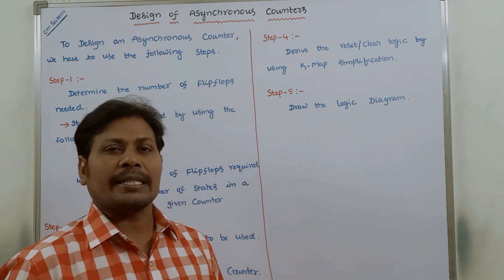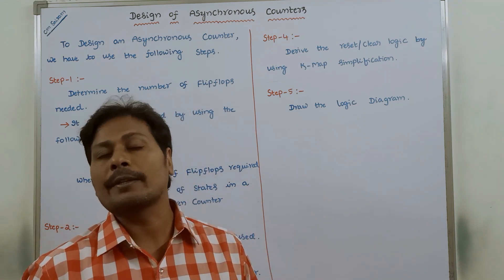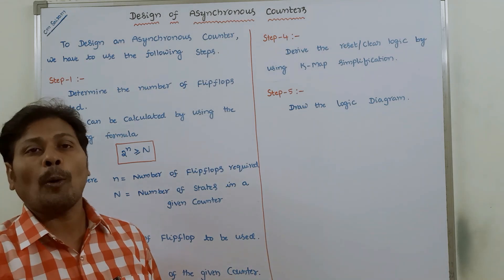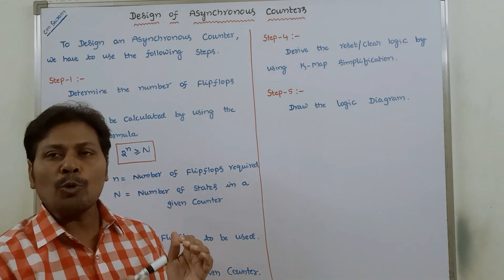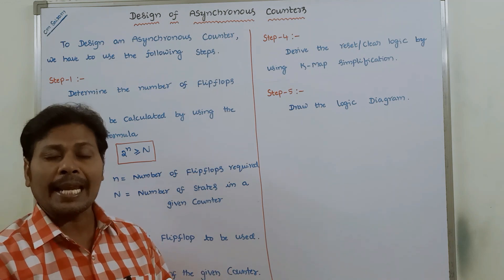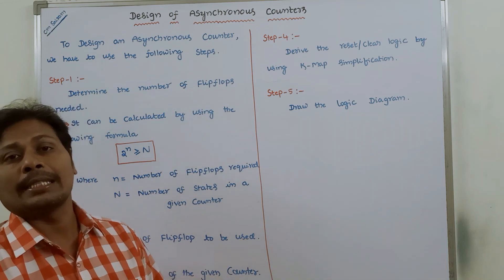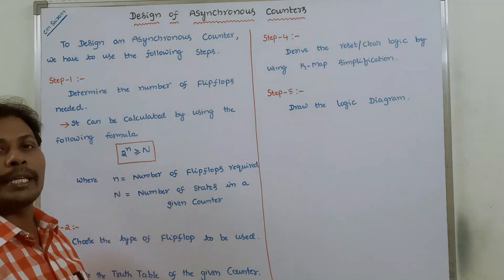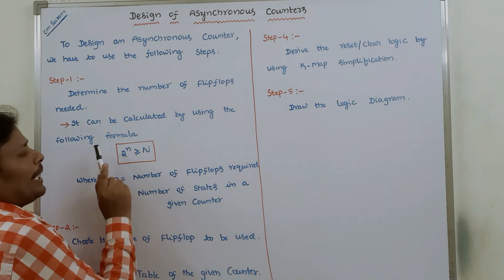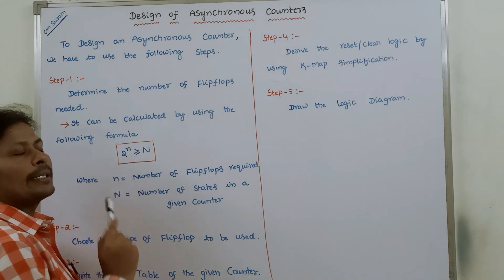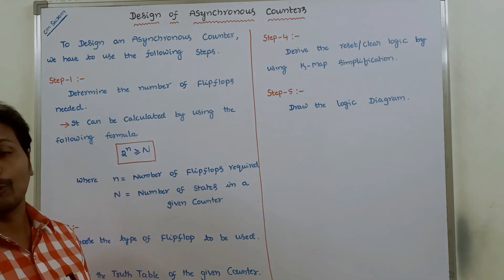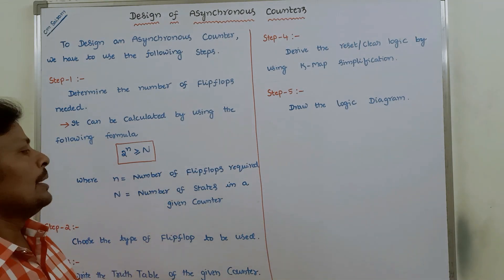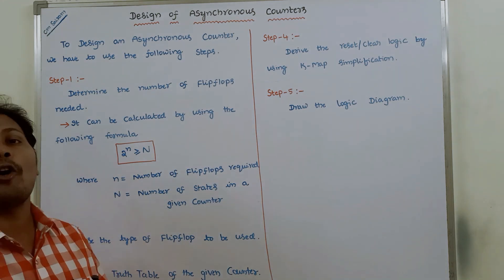To design any asynchronous counter, we have to follow the following steps. Step 1 is to determine the number of flip-flops needed — that means how many flip-flops are required to design an asynchronous counter. That can be calculated using the formula: 2 power n greater than or equal to capital N, where small n is the number of flip-flops required and capital N is the number of states in the given counter.